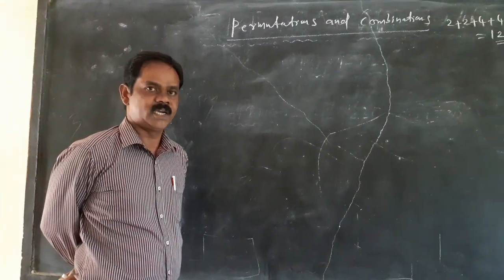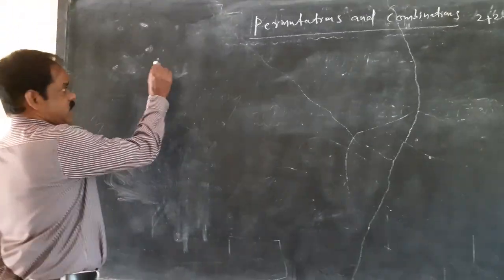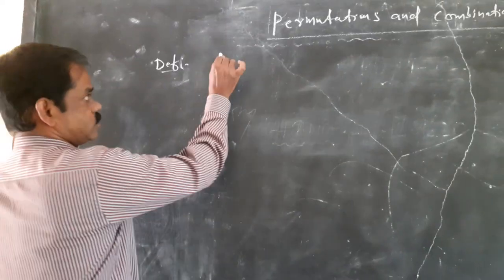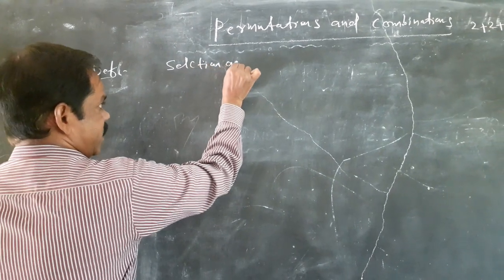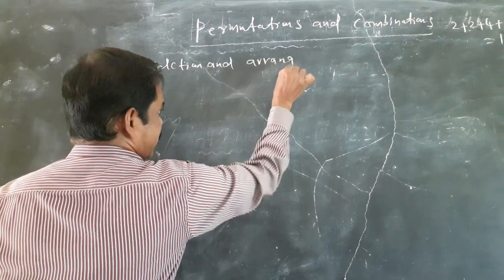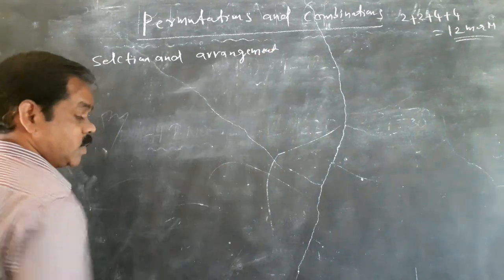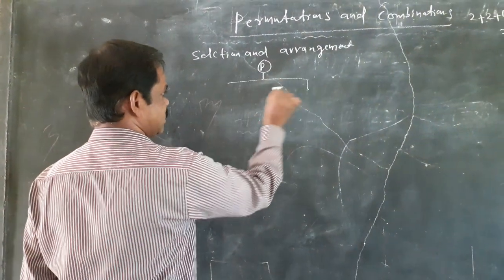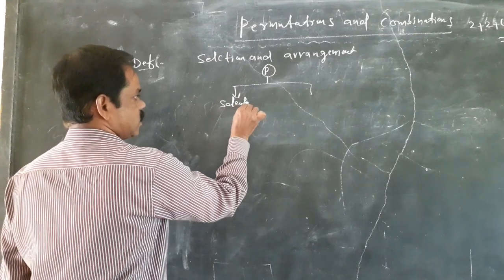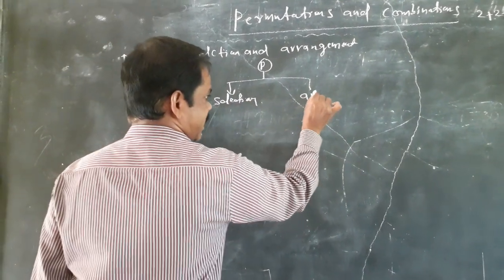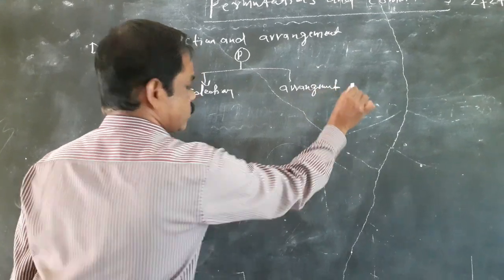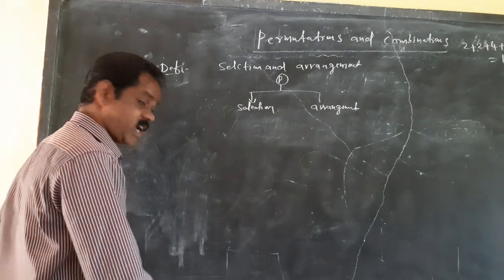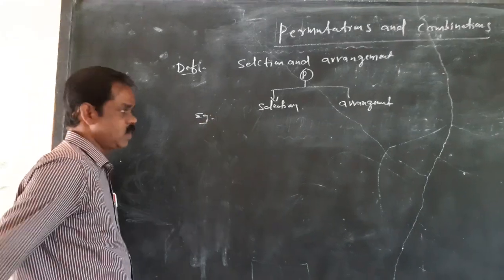Today we are discussing permutations and combinations. First, the definition of permutation: permutation means selection and arrangement. That means permutation involves two steps — the first step is selection, and the second step is arrangement.